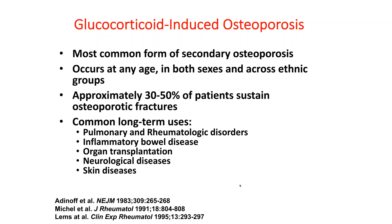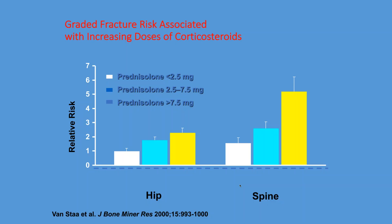Unfortunately, 30 to 50 percent of patients on glucocorticoids sustain an osteoporotic fracture. Since these agents are used so commonly across so many specialties of medicine — pulmonary, rheumatology, gastroenterology, transplantation, skin and neurologic diseases — it's something that many physicians need to know more about.